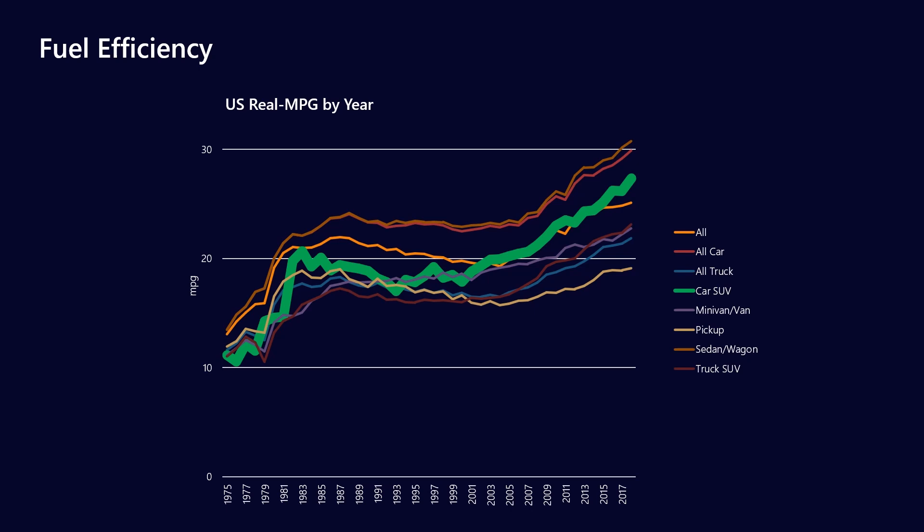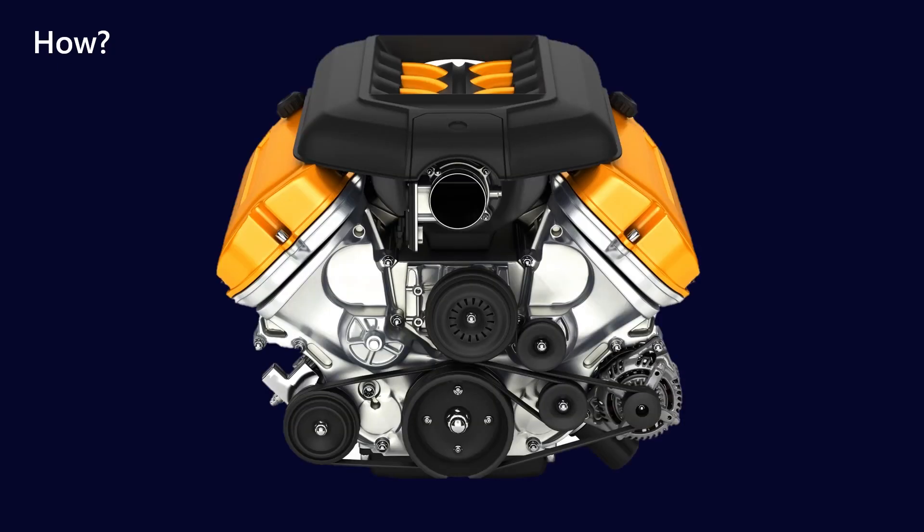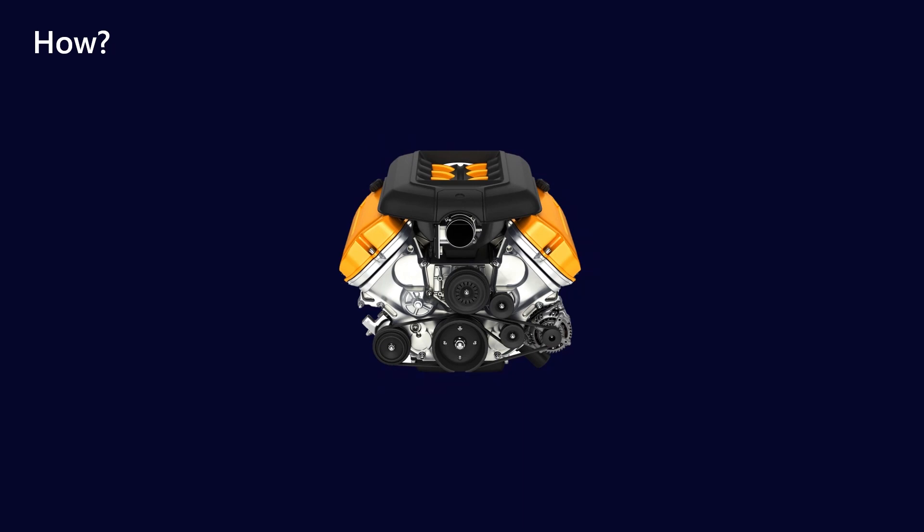So how have they achieved that in terms of engine design? Well, functionally, one of the first things they did was to reduce engine sizes. Where four-liter V8s had been common in the past, now even looking at Ford EcoBoost engines and things like that, one and a half to two liters is pretty much the norm for most passenger cars these days.